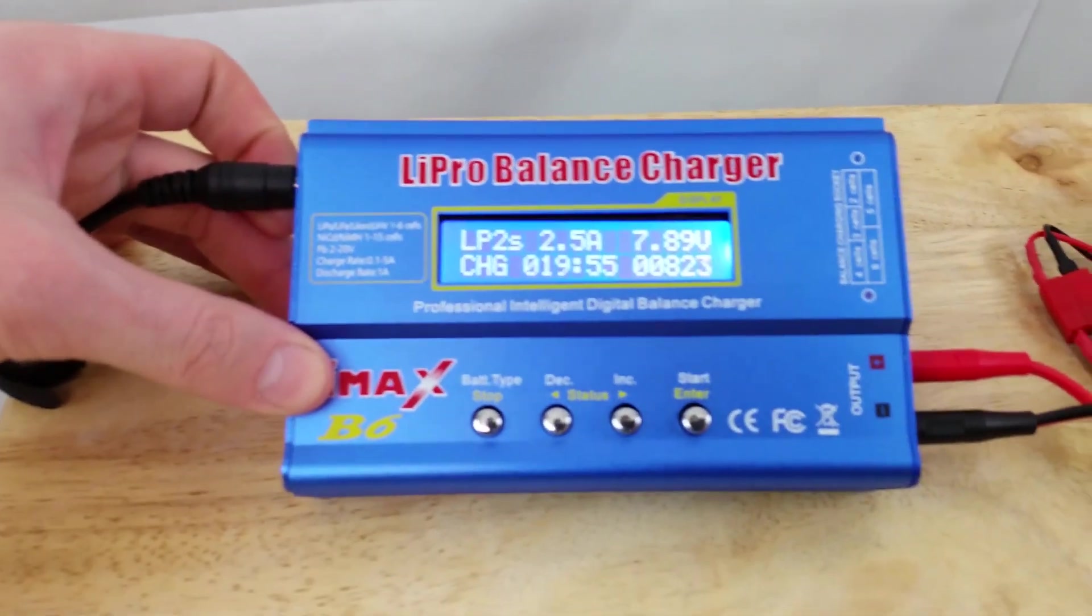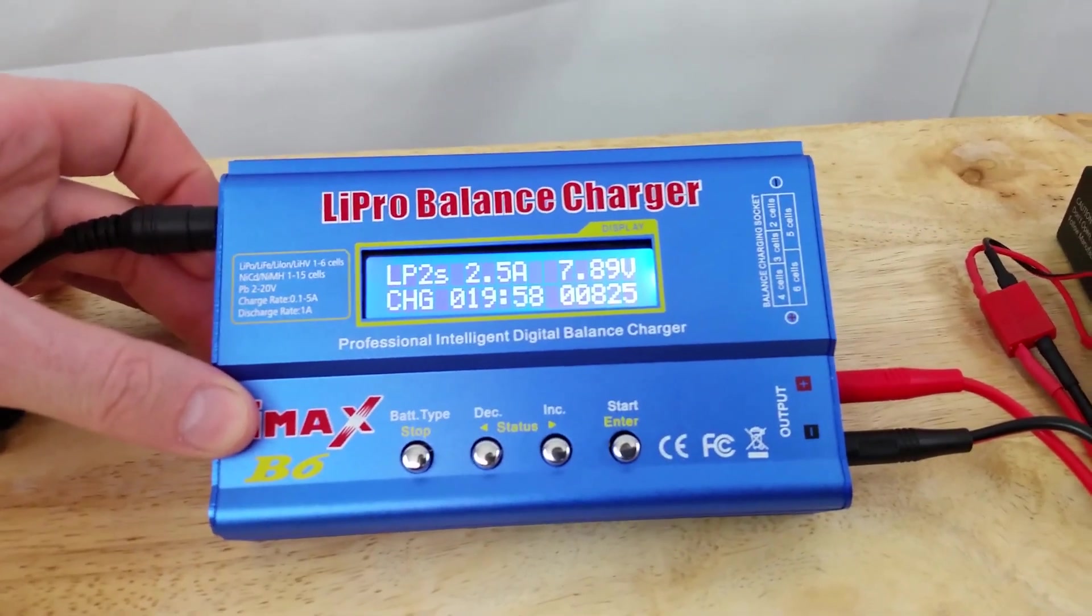So we're still at two blue lights and we are now at 19 minutes and 7.89 volts.